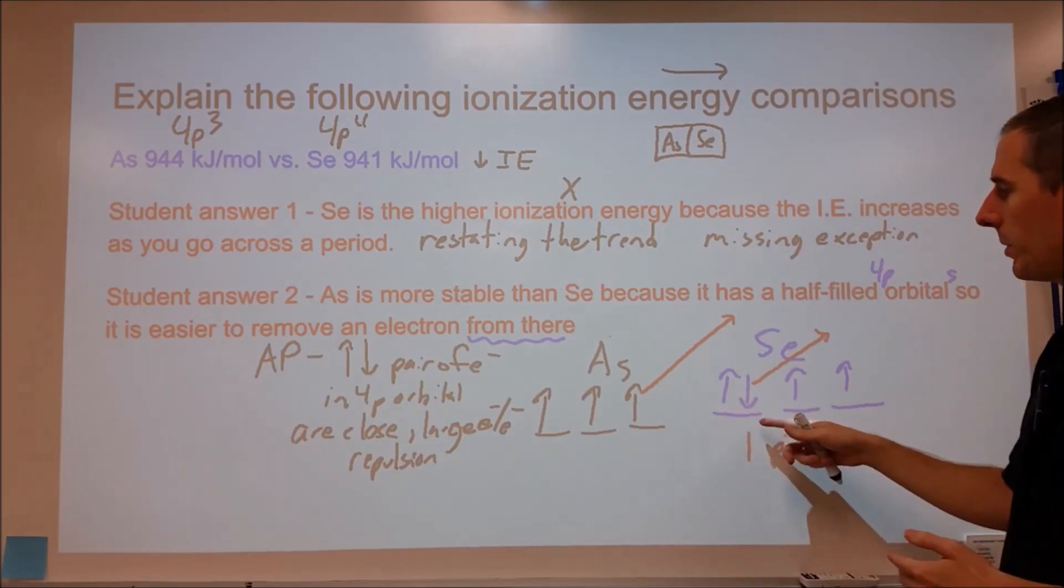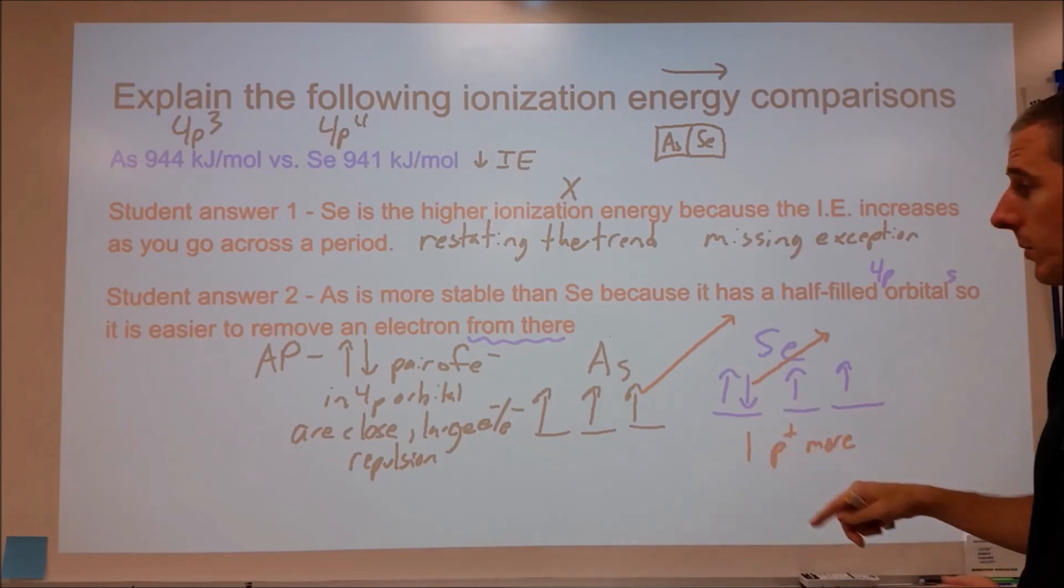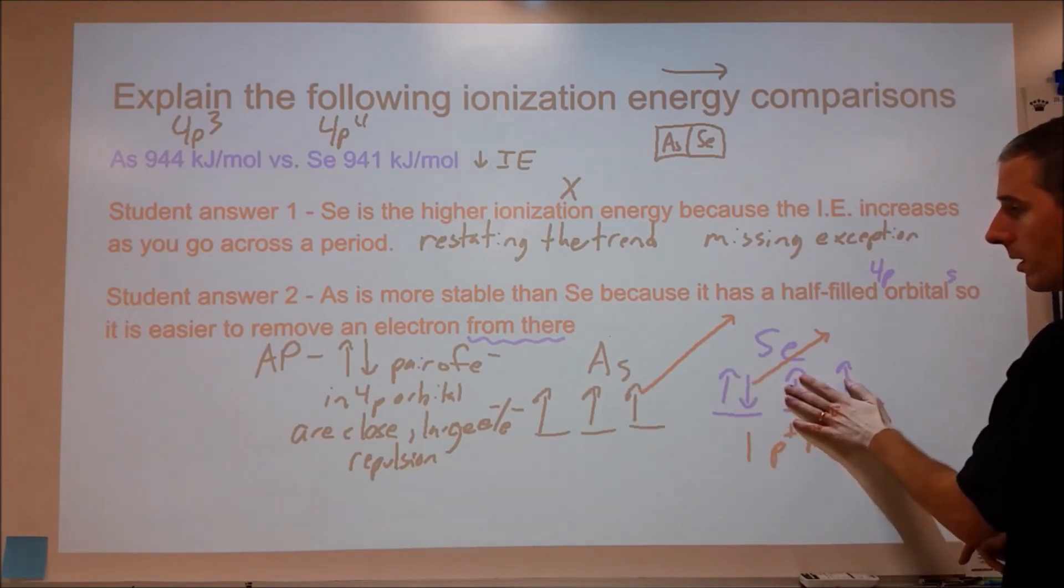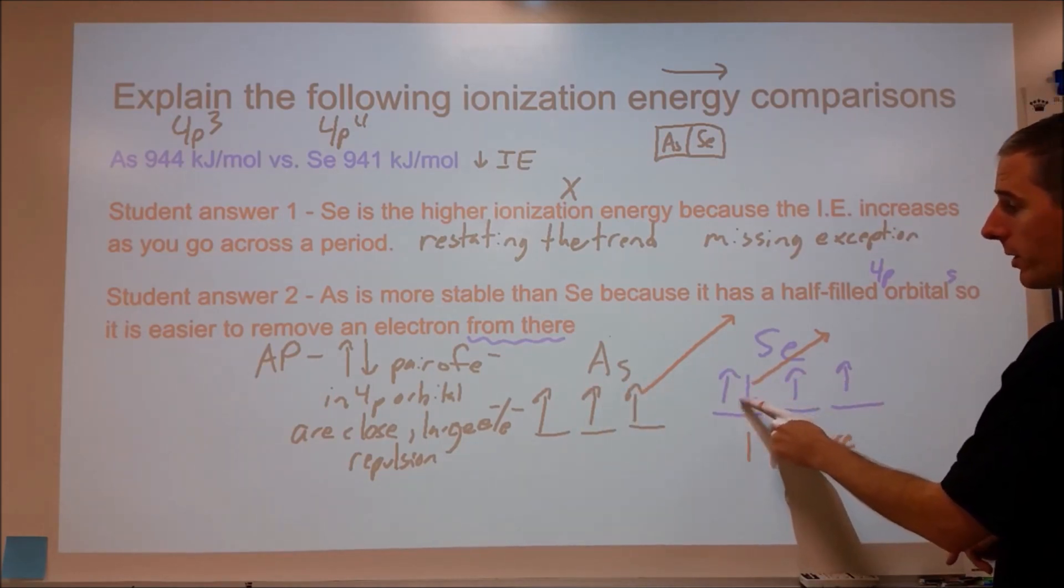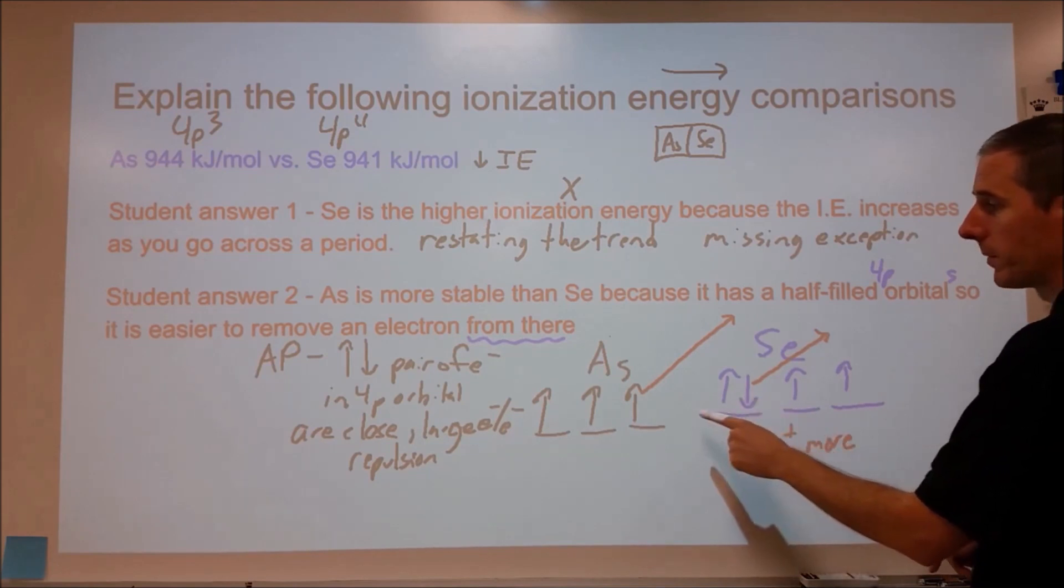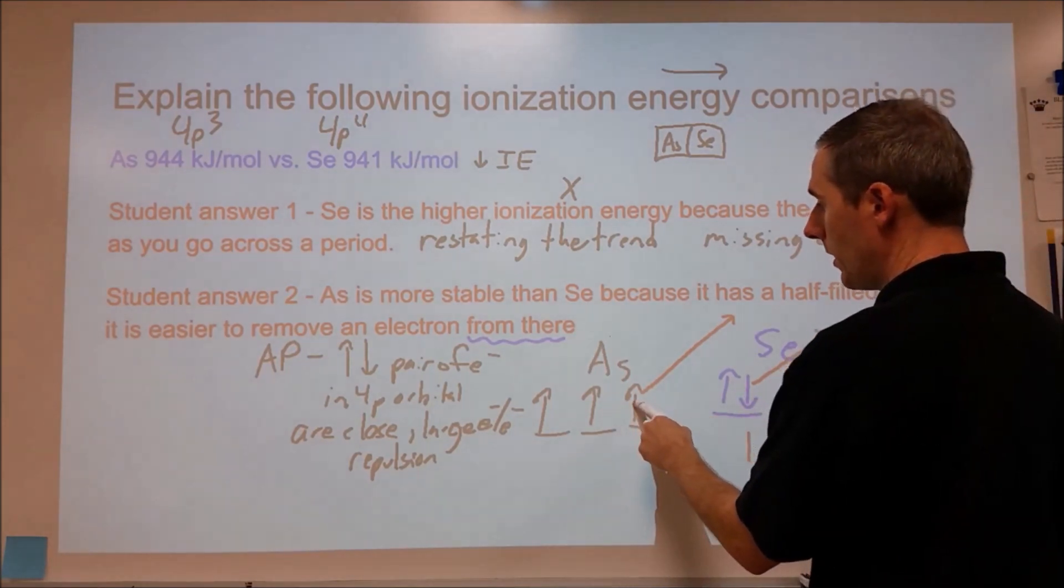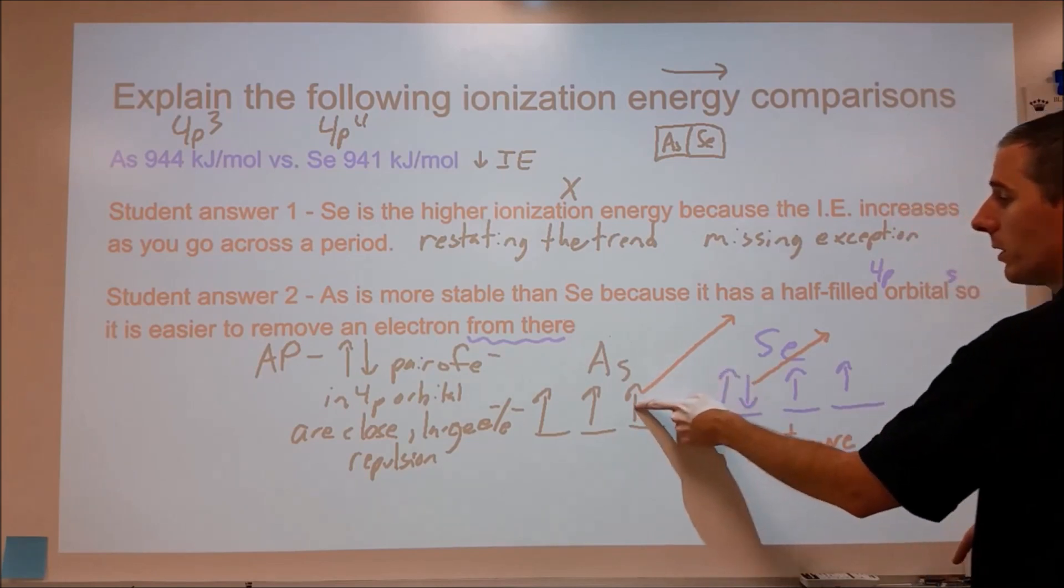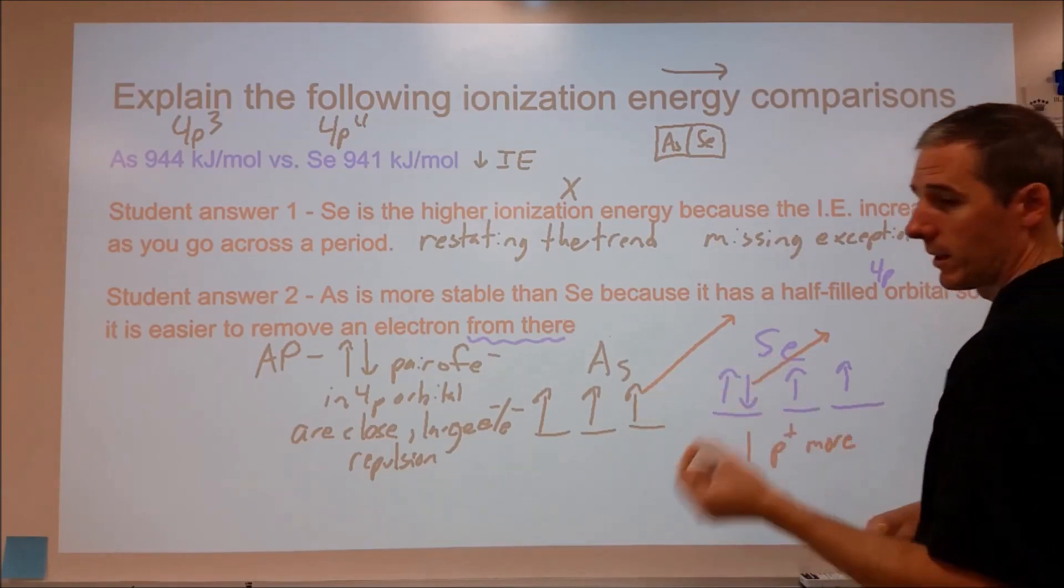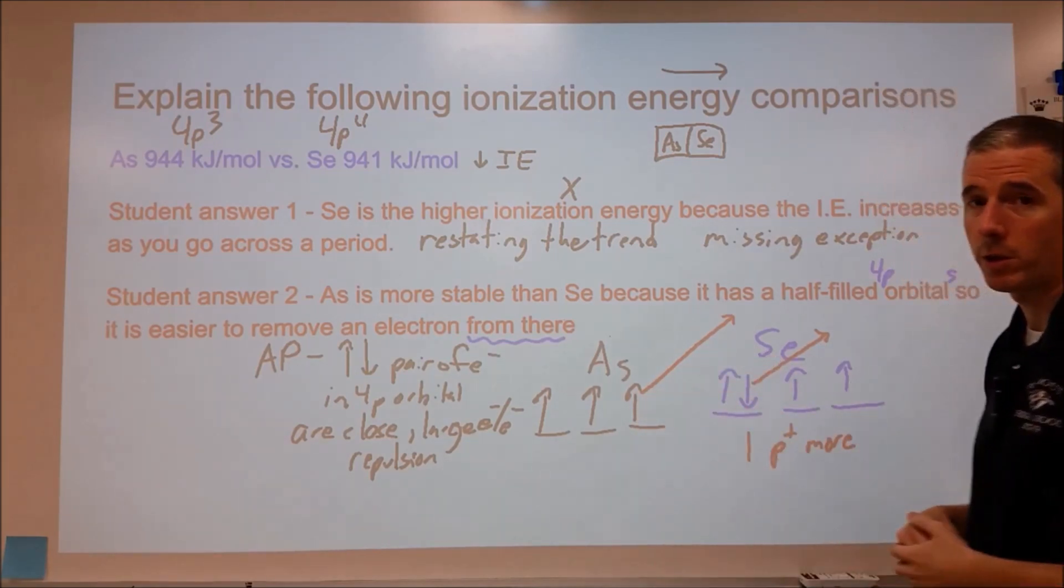But if you're taking an AP chem test or an IB chem test, this is the way you'll want to explain this. So you'll want to diagram it. You'll want to identify which electrons you're talking about here in selenium. And then you'll want to say that in arsenic, you don't have that extra repulsion. So therefore, even though there's one fewer proton, this is an exception and therefore it's more challenging to remove.